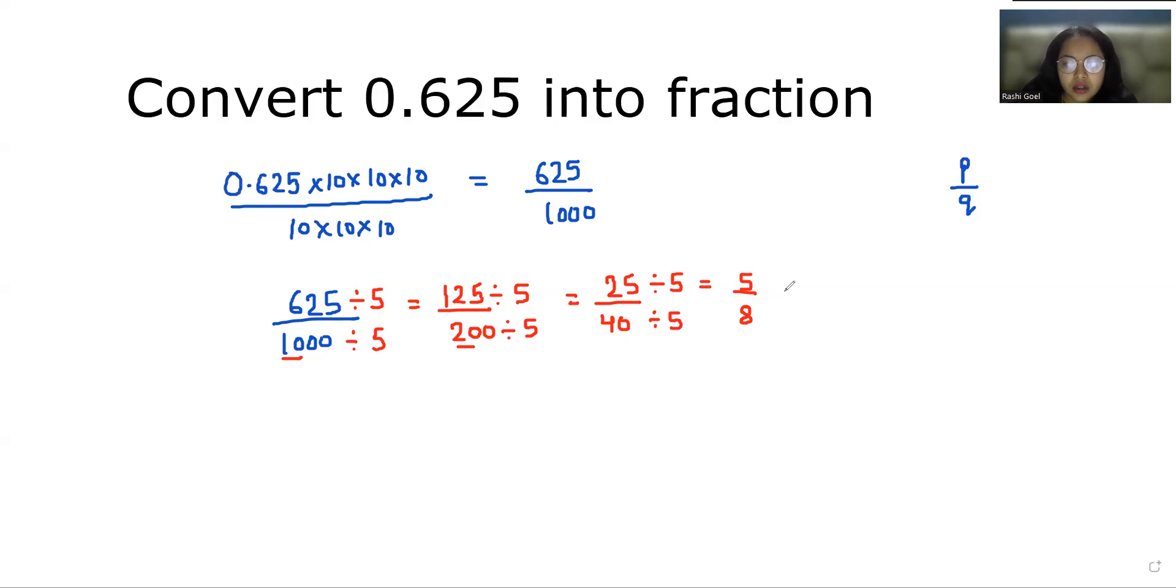Now 5 and 8 have no common factors, so we leave it here. Therefore, 0.625 in reduced fraction form is 5 by 8. I hope it's clear and you find it useful. Please give a thumbs up and subscribe to my channel. Thank you!